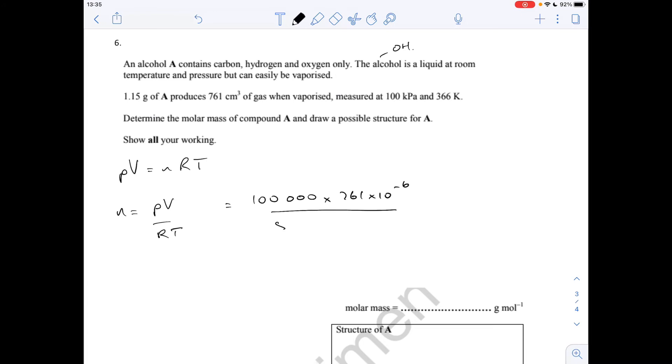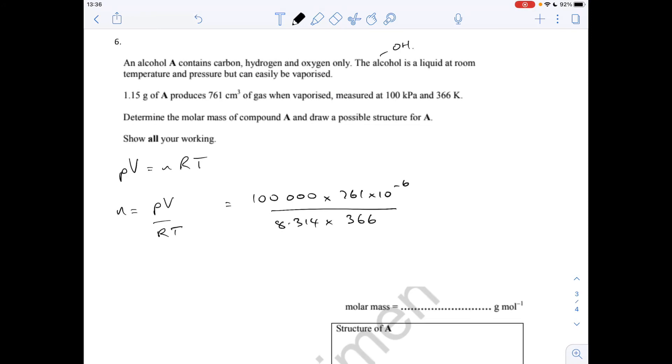Divided by R, 8.314, that's on the data sheet, you don't need to remember that. The temperature's in the correct unit, Kelvin, so 366. Putting all that in the calculator, we'll get 0.0250 moles of A. So the MR is mass over moles, 1.15 over that mole value, and that comes out at 46.